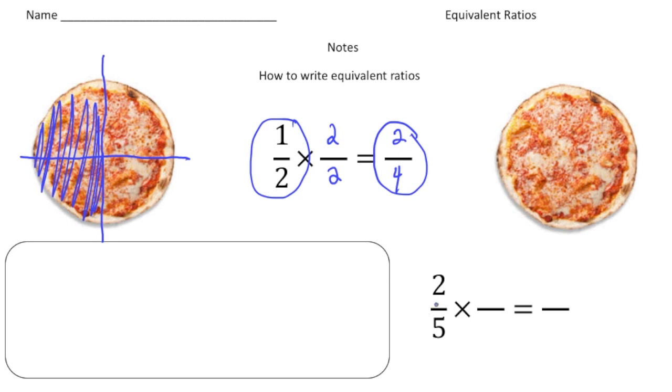So let's do another one here. This time we have two fifths and I'm going to multiply it by a common factor of, I don't know, let's go seven. So I'm going to multiply the two times seven and also the five times seven. So two times seven is 14 and five times seven is 35, which means 14 thirty-fifths is the same as two fifths.